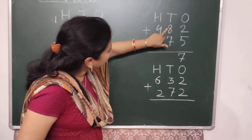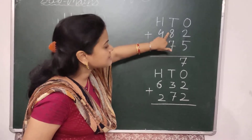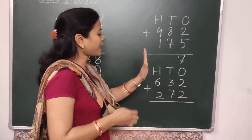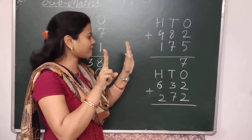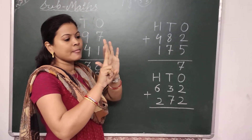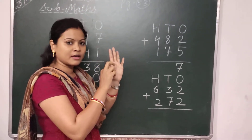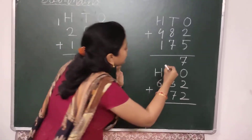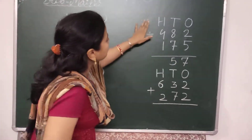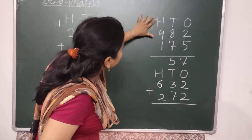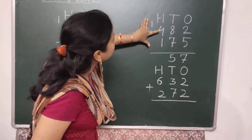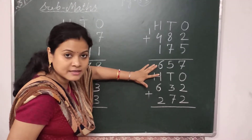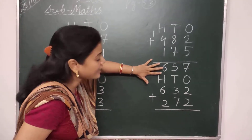In the 10's place, the numbers are 8 and 7. 8 is the larger number, so I keep 8 in my mind and count 7 fingers: 8, then 9, 10, 11, 12, 13, 14, and 15. I write here 5 and carry 1 to the 100's place. In the 100's place, 1 plus 4 is 5, then 5 plus 1 carried is 6. Your answer is 657.